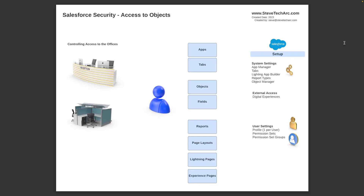You've entered the building and been granted access into Salesforce, either through the primary login or through a community. Now the question is: what offices can you go into? On the right side you'll have App Manager, your tabs, the Lightning App Builder, report types and reports, and Object Manager. For external access, you'll have Digital Experiences. Some settings are still at the profile level, but Salesforce is migrating many of these elements onto permission sets, granted through permission set groups. For this type of functionality, you'll primarily focus on permission sets and permission set groups. When there's going to be one setting per user, that will likely still gravitate to profiles.